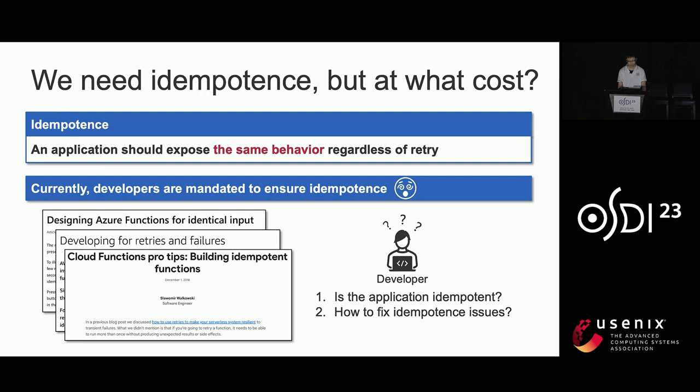To address the problem, service platforms mandate developers to write idempotent applications. An application is idempotent means that it always exposes the same behavior regardless of retry. However, this requirement introduces a heavy burden for developers. First, it's hard to determine whether a given application is idempotent. Second, how to fix idempotent issues is also a problem.